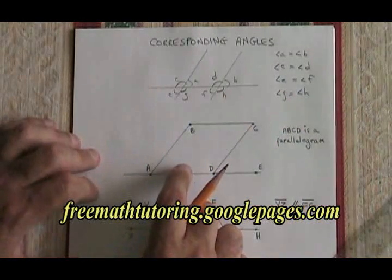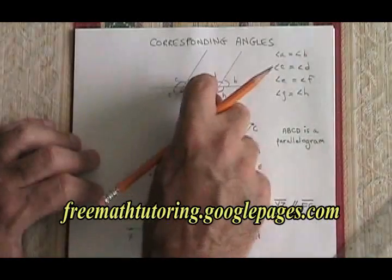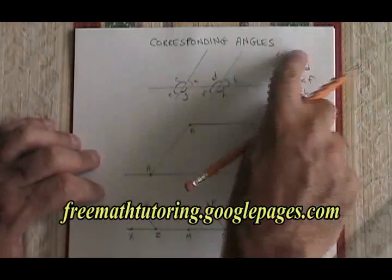So whenever two parallel lines cross the same line, you will have created four sets of corresponding angles.